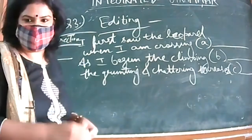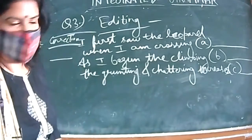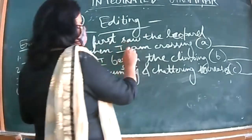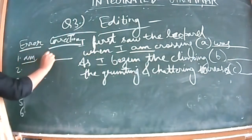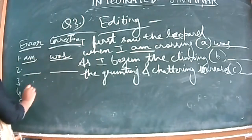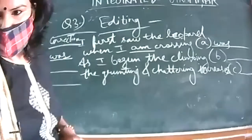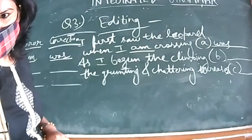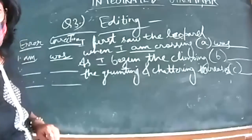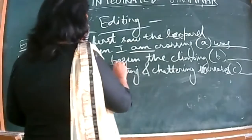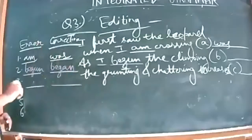The first one is very easy. Arshpreet answers: error is 'am,' correction is 'was' — 'I was crossing.' Correct. You underline 'am' and write 'was' in the paper. For the second one, in place of 'begun' it is 'began' — second form. 'As I began the climbing.' Very good.